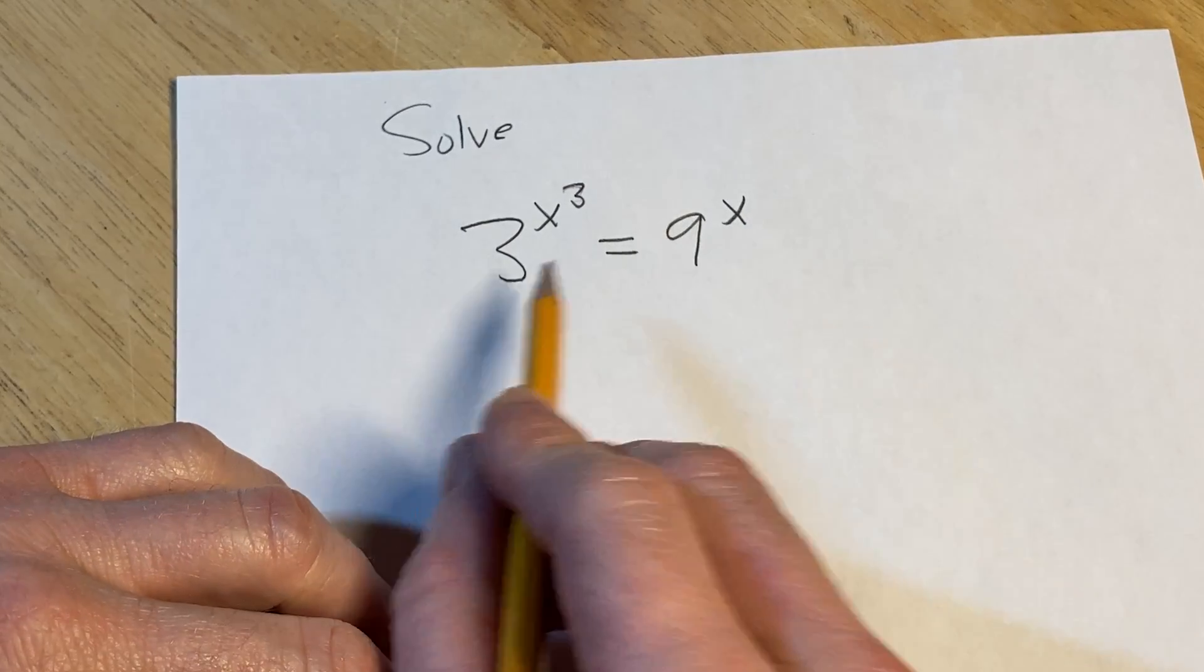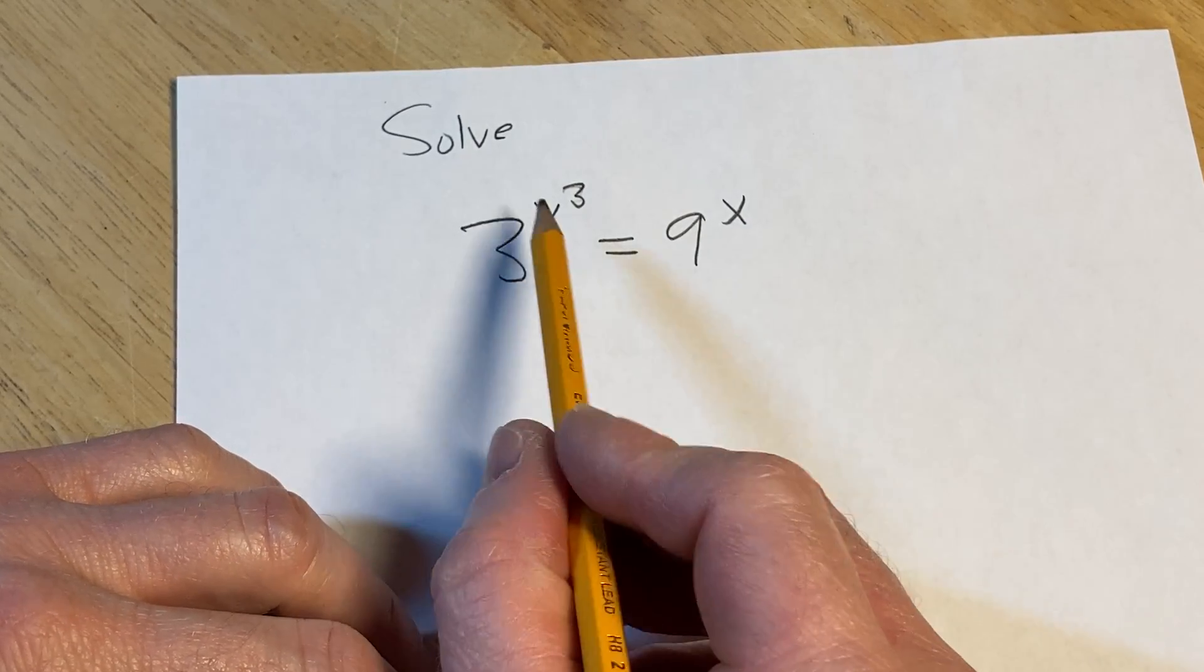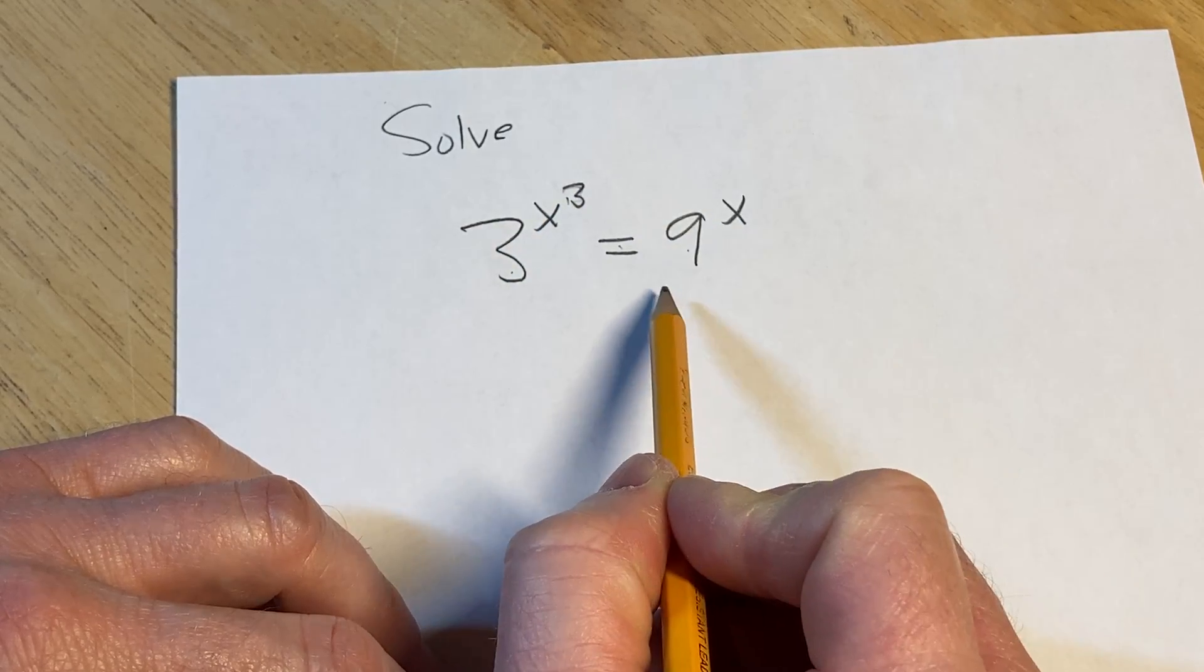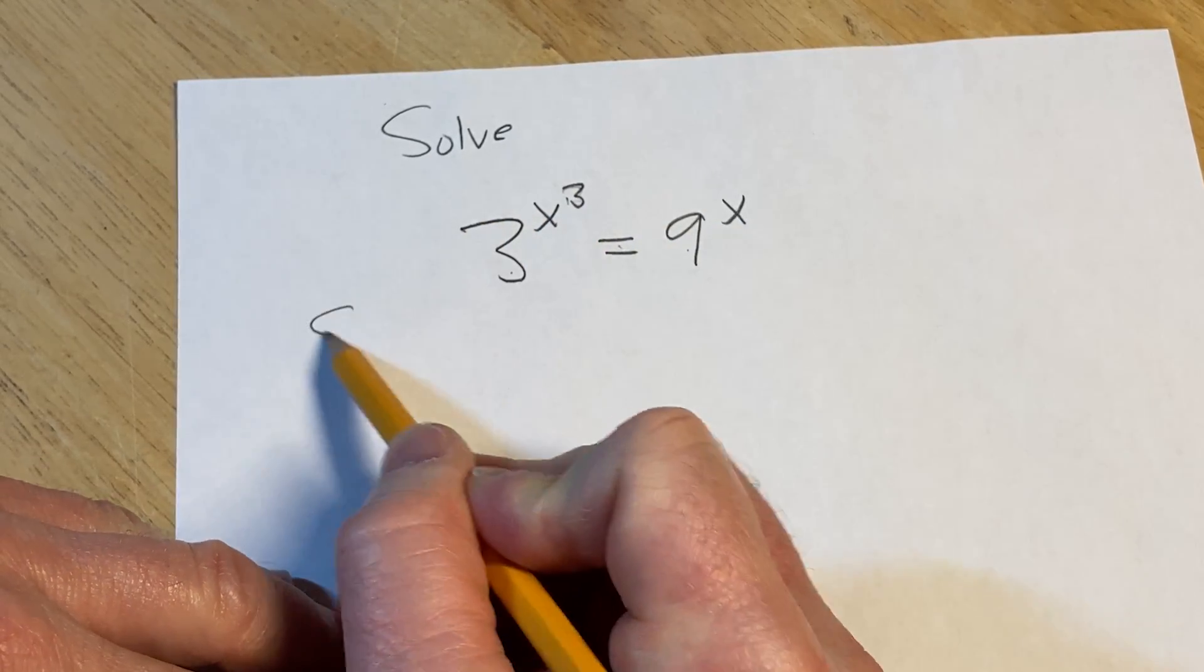Hello, in this video we're going to solve this exponential equation. We have 3 to the x cubed equals 9 to the x. Let's go ahead and solve this.